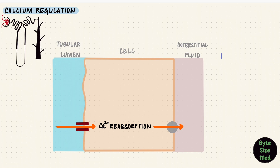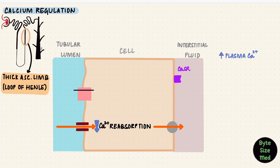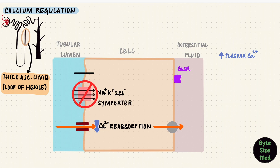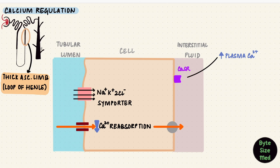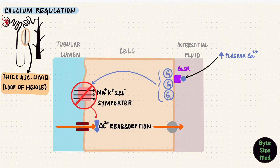The kidney can regulate calcium directly too. When plasma calcium levels are high, it reduces calcium reabsorption via a calcium-sensing receptor, like in the thick ascending limb of the loop of Henle. That segment has a sodium-potassium 2-chloride co-transporter; if that transporter is inhibited, it changes the potential difference between the cell and the tubular lumen, which was the driving force for calcium. So when high calcium binds the calcium-sensing receptor via multiple G proteins, this transporter gets inhibited and calcium reabsorption reduces.